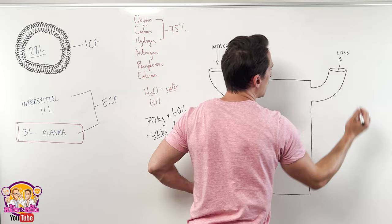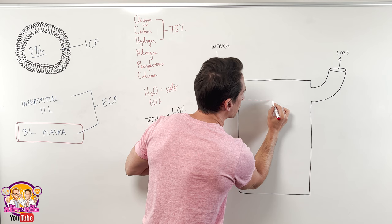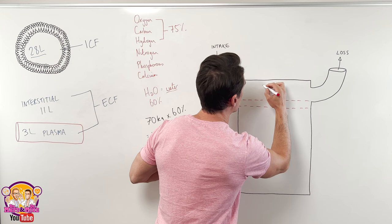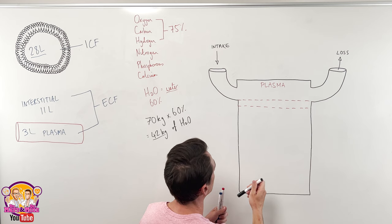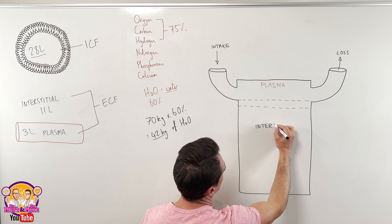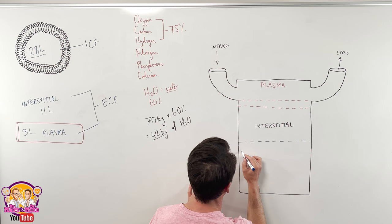So let's divide this up into these three particular compartments. So the first compartment I want to do is that of plasma. So here is the plasma. Next is going to be the interstitial fluid. And then the next is going to be intracellular. ICF.